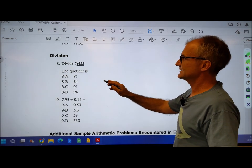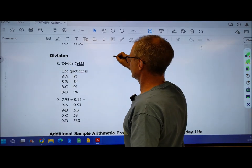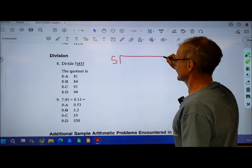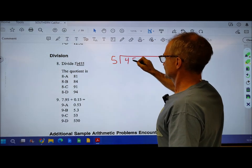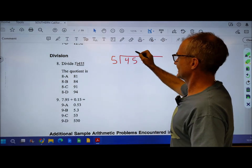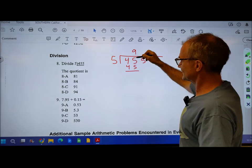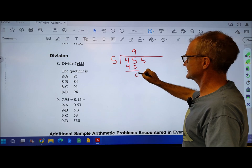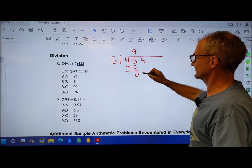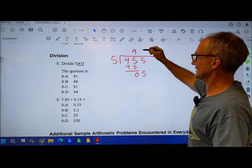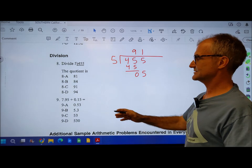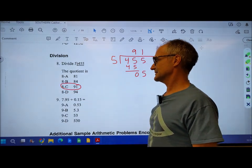Number 8, divide. So 5 goes into 455. 5 goes into 45 nine times to give me 45. Subtract, 5 minus 5 is 0, 4 minus 4 is 0. Bring down that 5. 5 goes into 5 one time. My answer is 91, answer 8C.